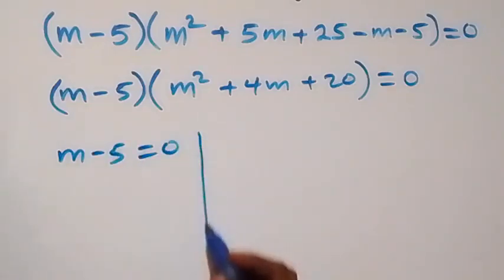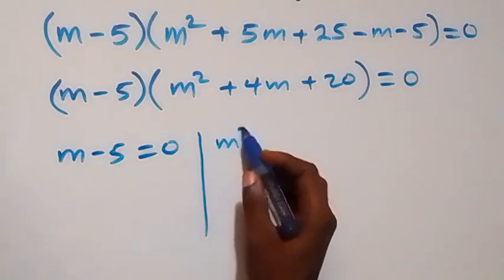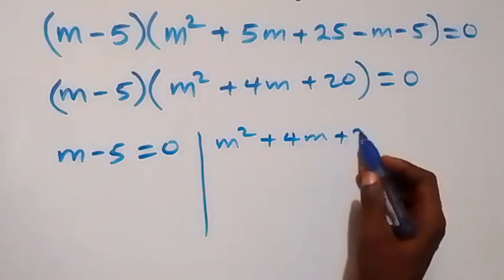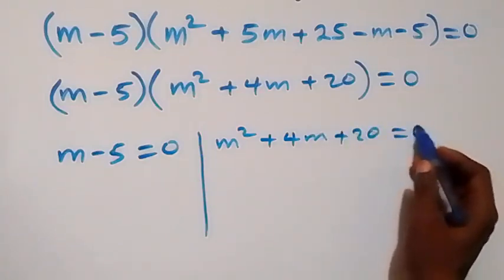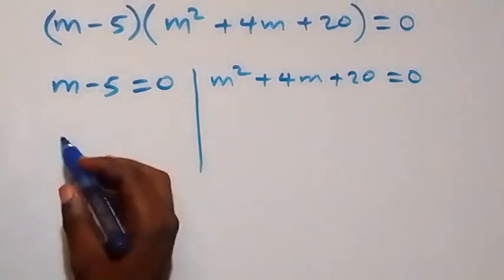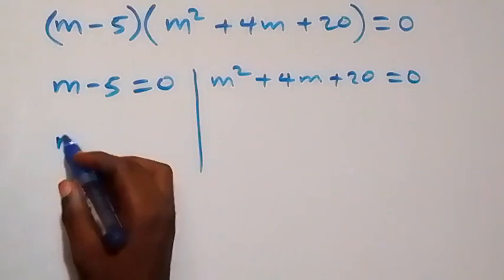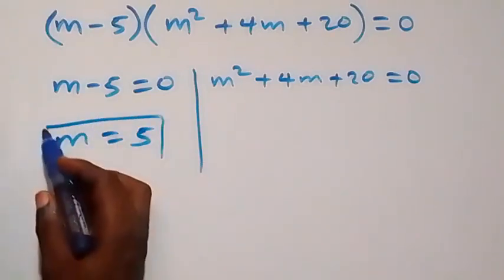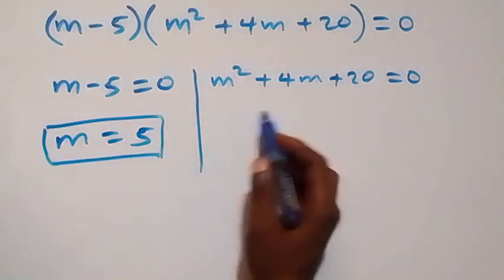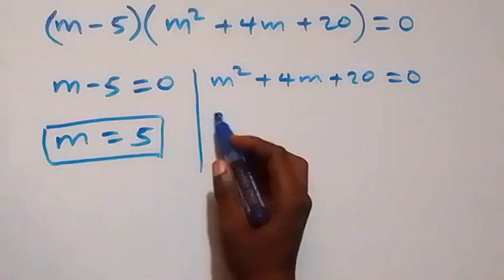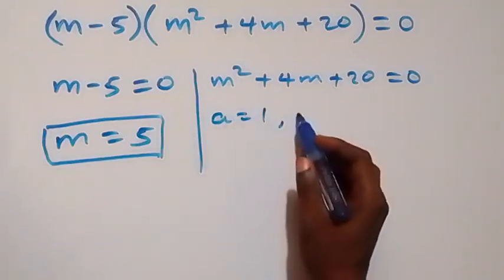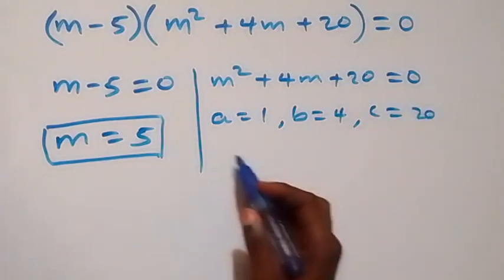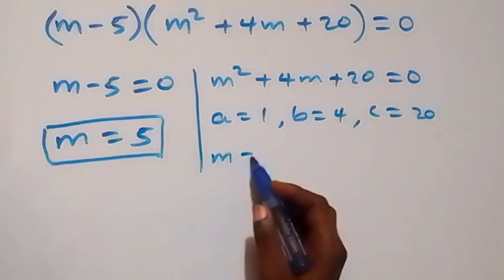We have two cases. First: m minus 5 equals zero, which gives m equals 5. Second: m squared plus 4m plus 20 equals zero. For the quadratic formula, a equals 1, b equals 4, and c equals 20.